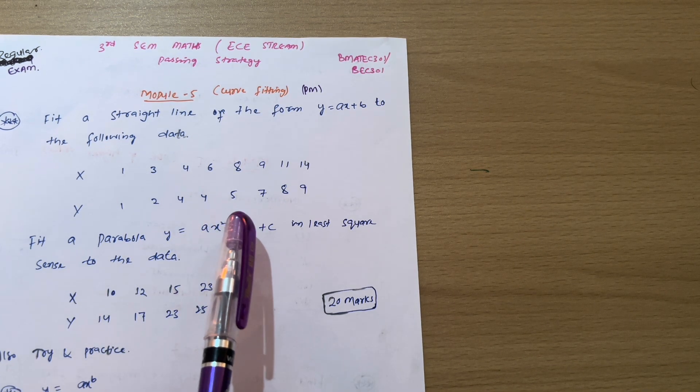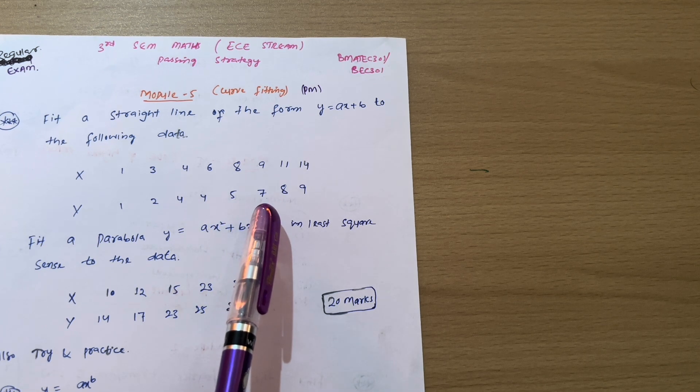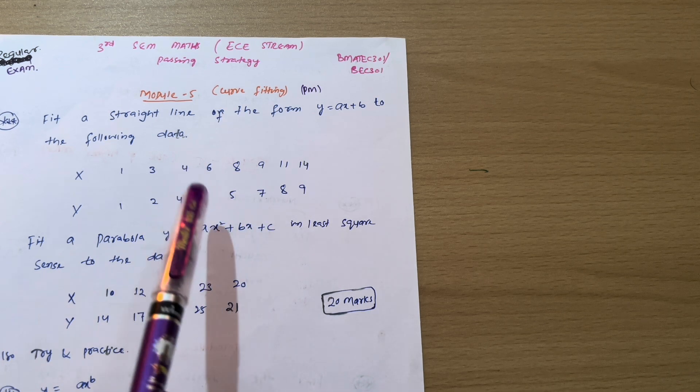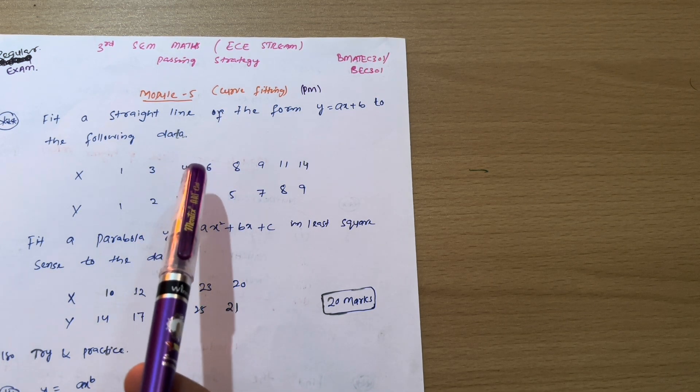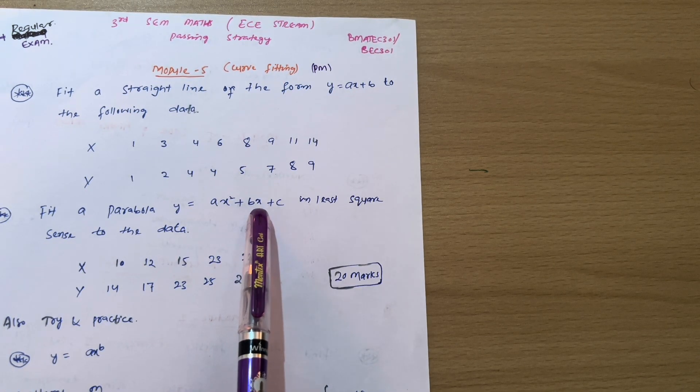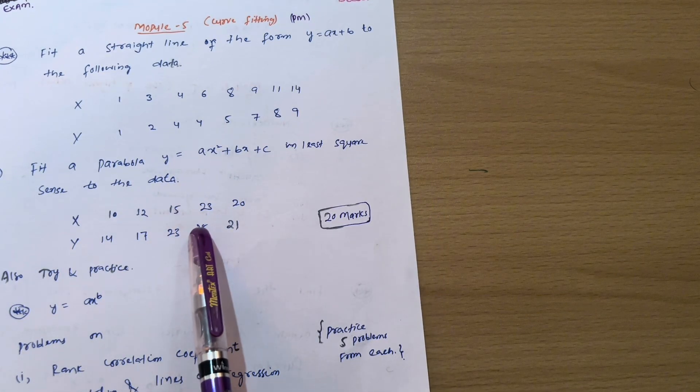And if you want to refer previous year question papers for practicing, I have already uploaded all previous year question papers on my Instagram account. So you can also check that link in the description box. So this is the straight line problem in which you have to cover at least three to four problems. Next, we have fit a parabola y equals ax square plus bx plus c in least square sense to the data.